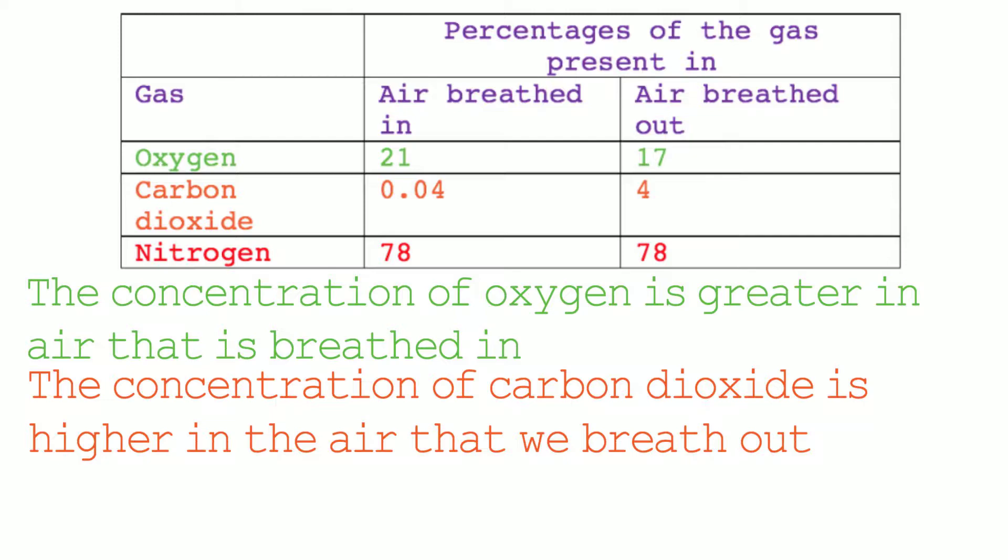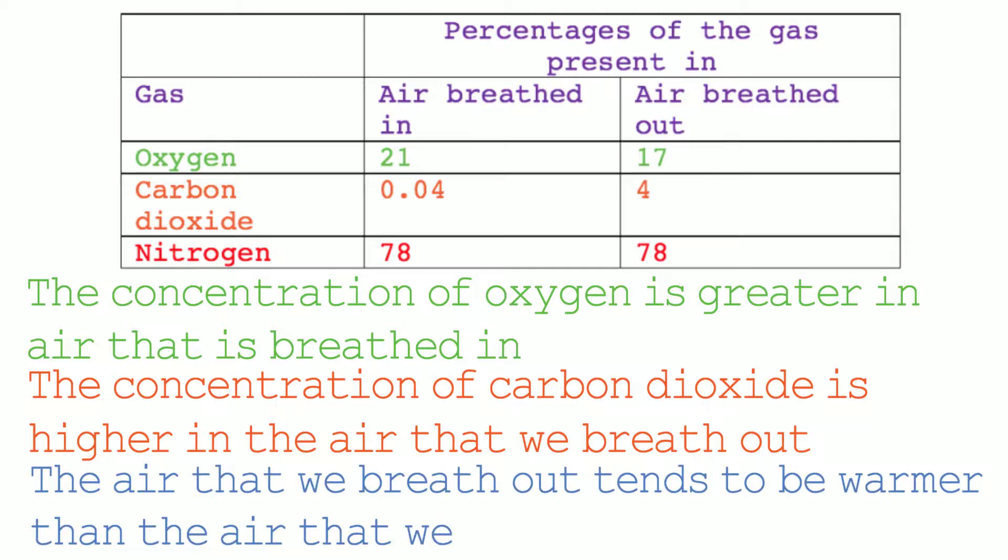The carbon dioxide is taken from the cells that respire into the lungs via the bloodstream. The carbon dioxide is then exhaled. Exhaled air tends to be warmer than the air that we breathe in. It also contains a lot more water vapour. The amount of water vapour in the atmosphere depends on weather conditions. If it is humid there are large quantities of water vapour in the air; when it is not humid there are small quantities. This is why water vapour is not included in the table.